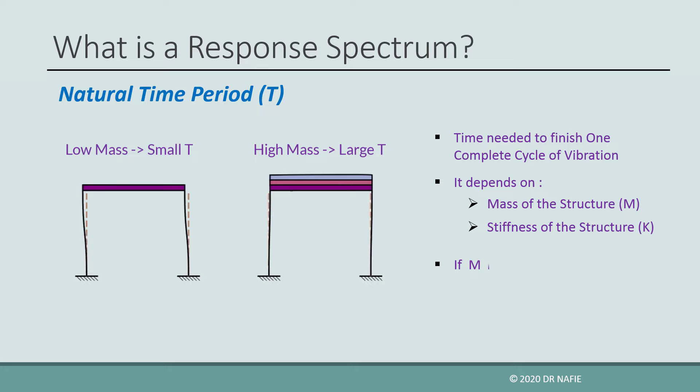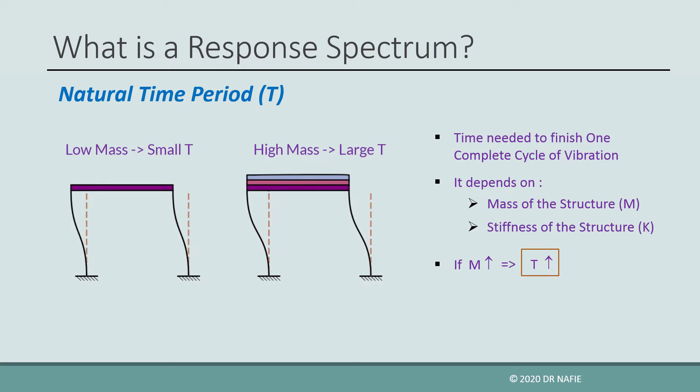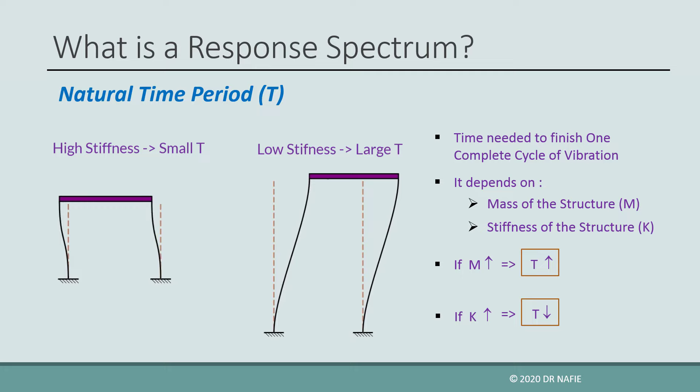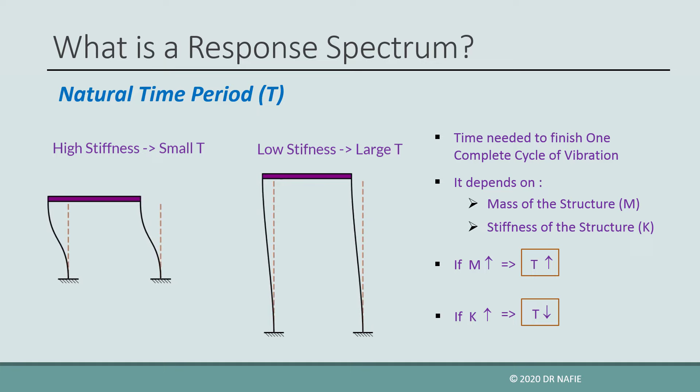When the mass increases, the time period also increases. Heavy buildings vibrate slower than light buildings. On the other hand, when the stiffness increases, the time period decreases. Short buildings are stiffer than tall buildings. Therefore, short buildings vibrate faster than tall buildings.